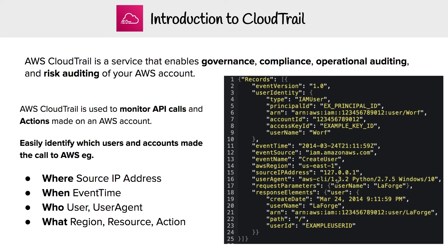The 'who' is the user agent, which can tell you the operating system, the language, and the method of making this API call, as well as the user itself — here we can see who made this call. And the 'what' refers to what service — it'll say what region and what service. This service is using IAM, and the action is creating a user.